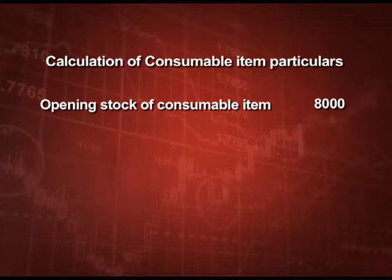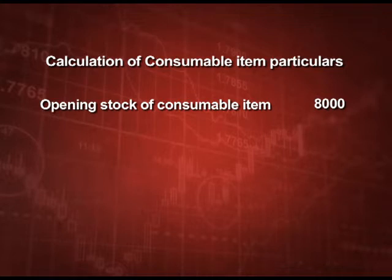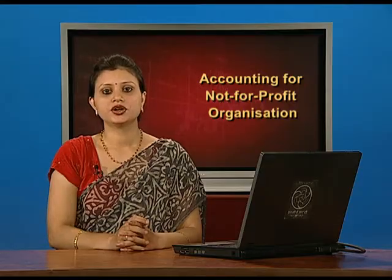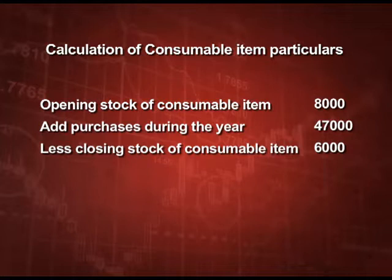Now let us discuss the solution of this question. Opening stock of consumable item rupees 8000, we have to add the purchases during the year of rupees 47000. Purchases means we are talking about cash purchases as well as credit purchases — that is why we have not adjusted opening and closing creditors. Then we deduct closing stock of rupees 6000. The amount shown in the income and expenditure account is rupees 49000.